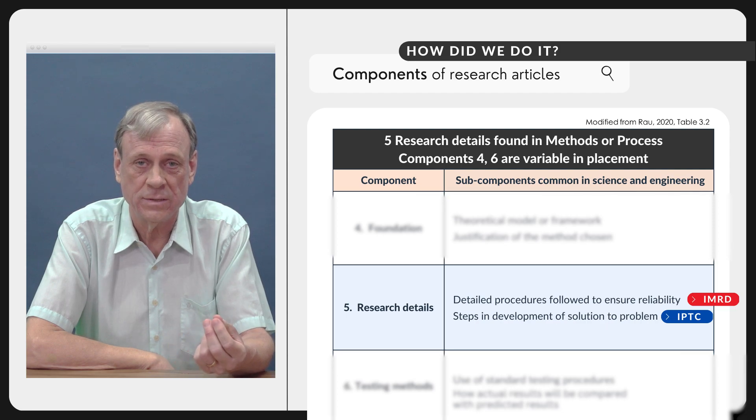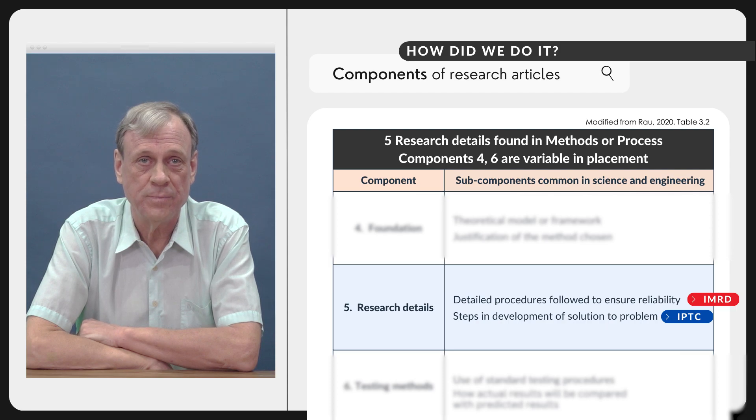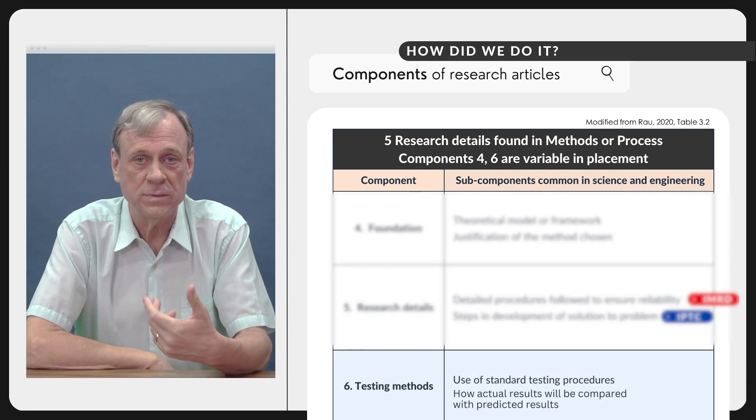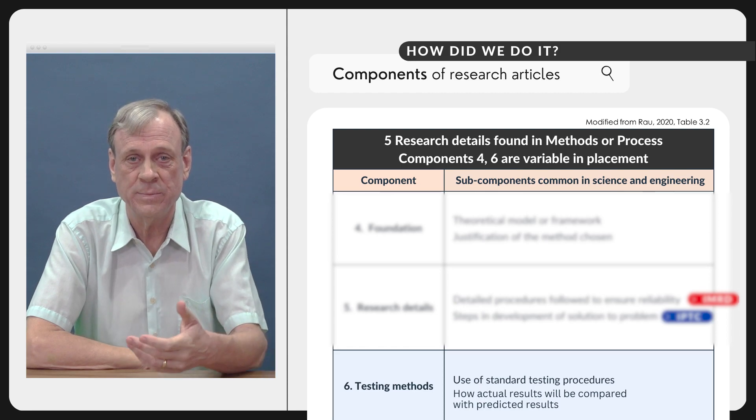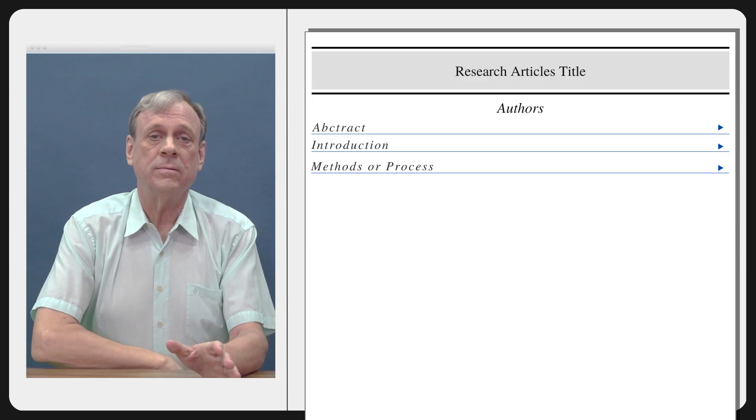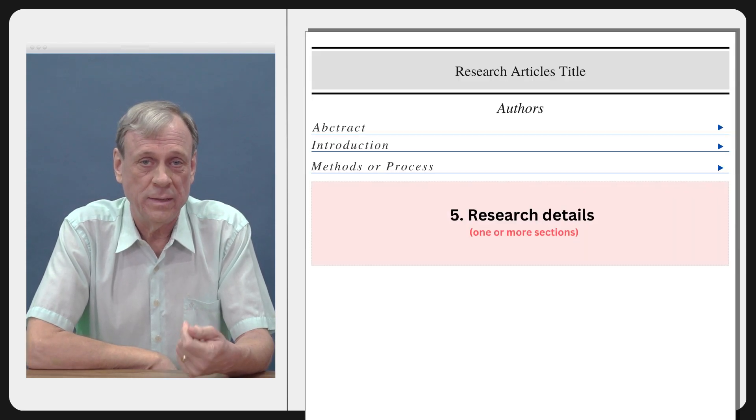Then the research details will talk about the detailed procedures you followed in the case of science or the steps that you followed in your design in the process division. And then the testing methods talks about standard procedures, standard testing procedures, and how the results will be compared with the expectations or with previous results.